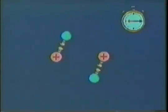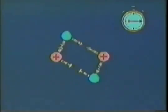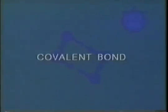If we could see the electrons at various moments, we might see this, or this, or this. On the average, each electron is being influenced not only by its own nucleus, but also by the other nucleus. A covalent bond is the name given to bonds like this in which atoms share electrons.